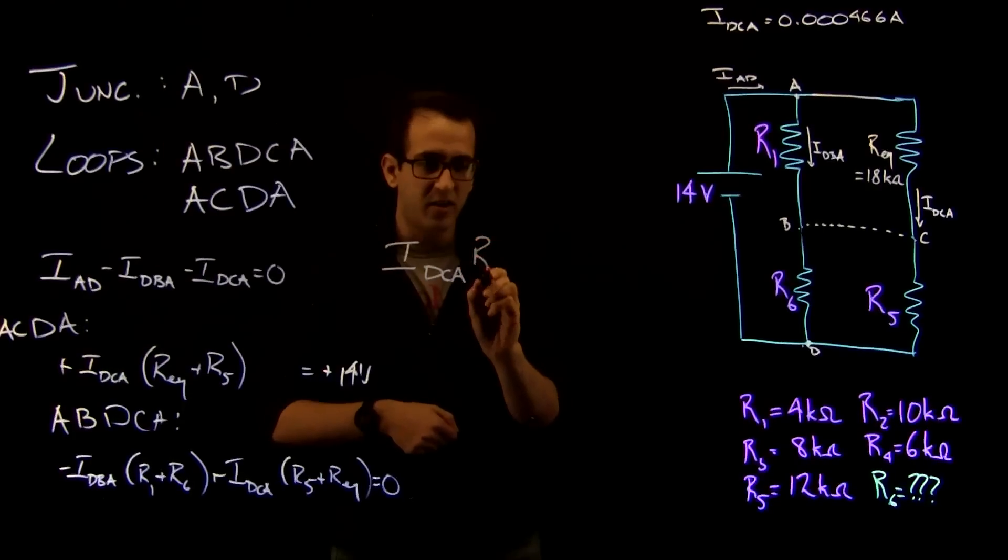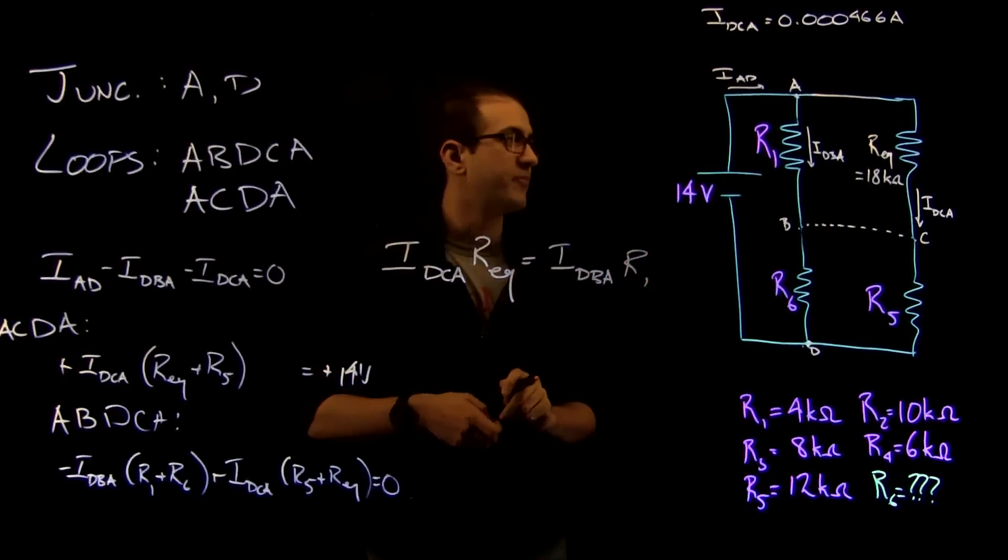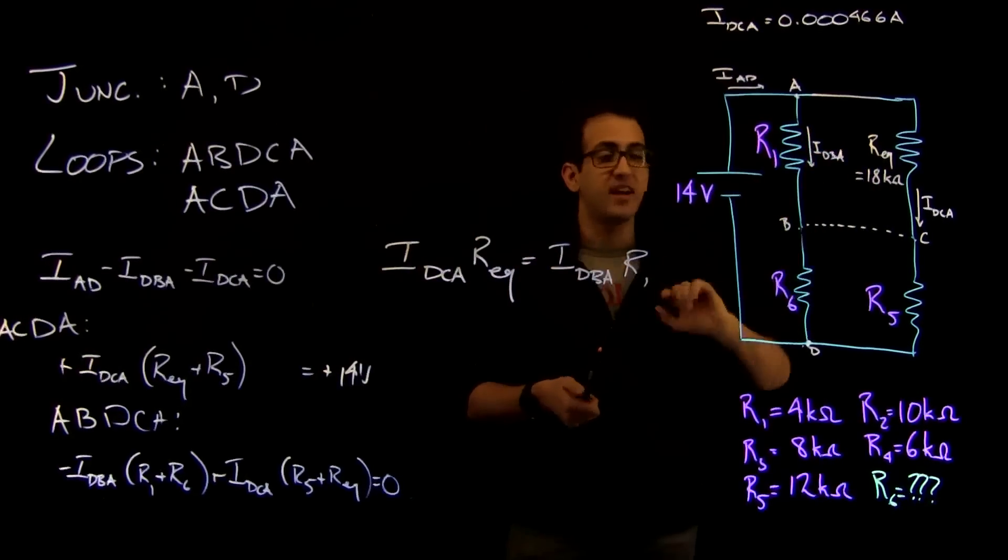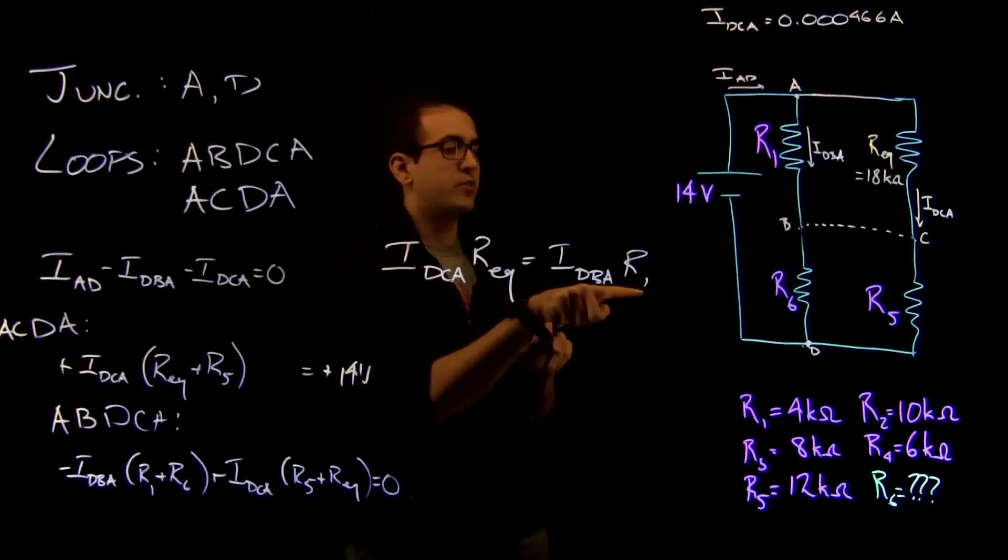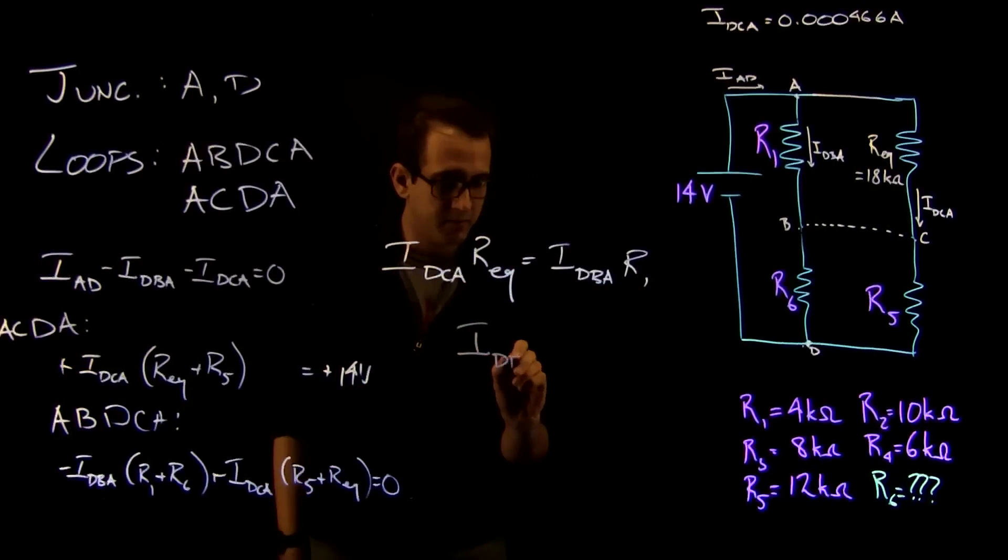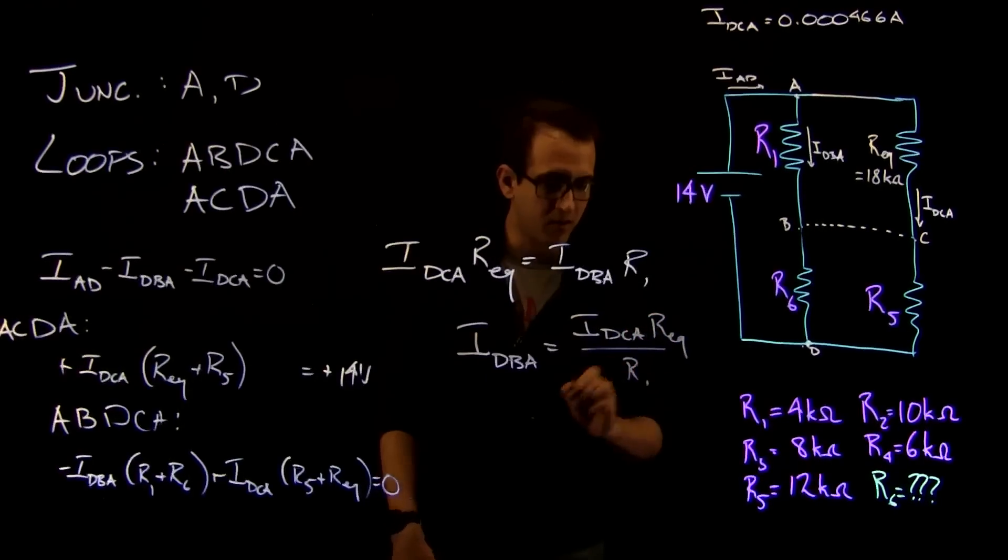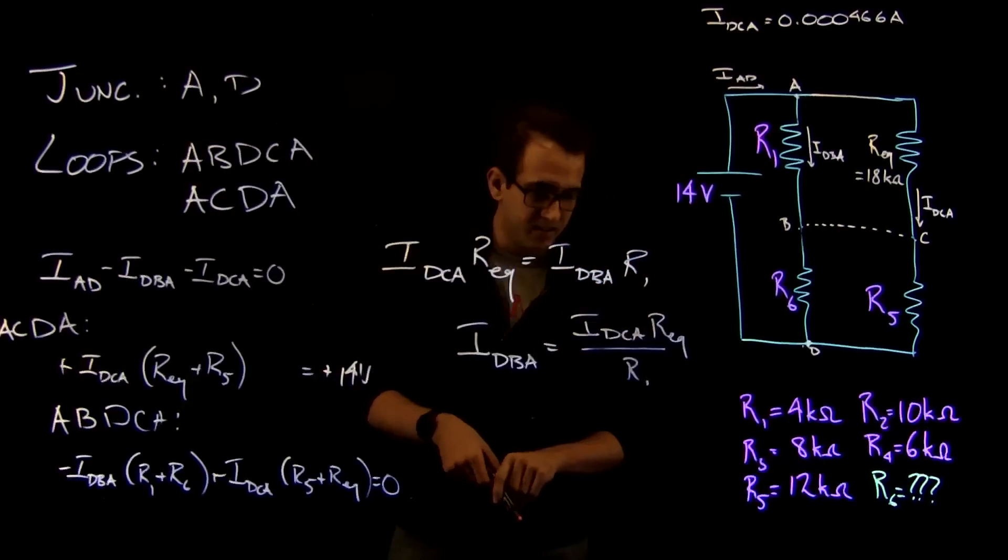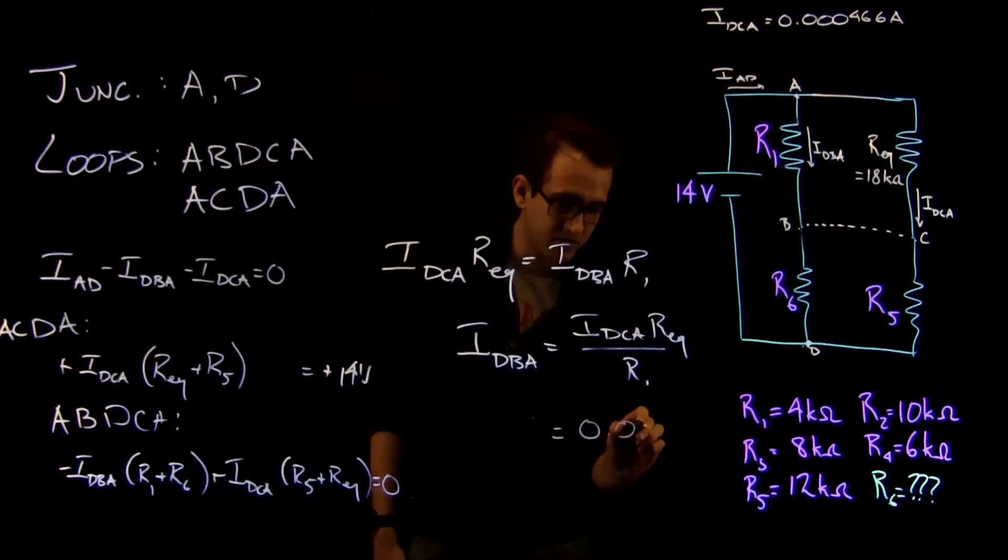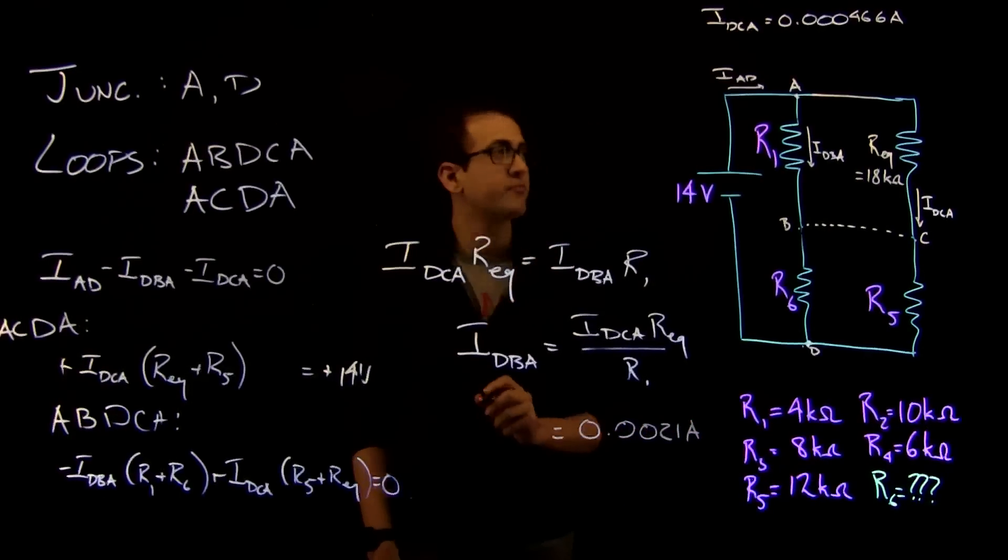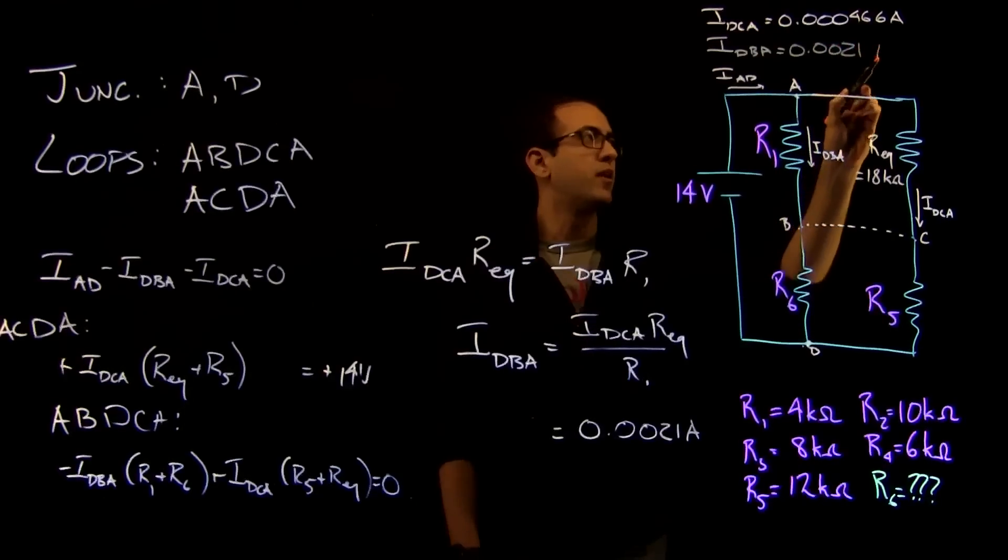So that lets us write this equation. IDCA times REQ is equal to IDBA times R1, because the voltage up here and here has to be the same in order for no current to flow from B to C. Well, we know IDCA, we know REQ, and we know R1. So we can rearrange. IDBA is equal to IDCA times REQ over R1. And if we plug in the numbers we have for that, we find that IDBA is equal to 0.0021 amps.